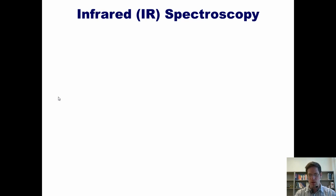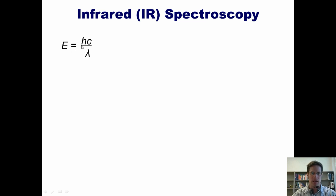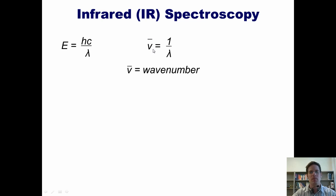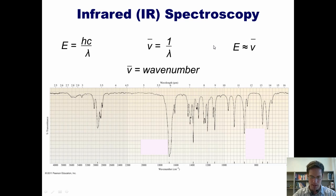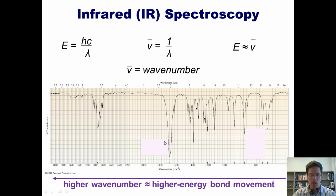I want to reacquaint you with a few physics equations. Here's the first: energy equals HC divided by lambda, where lambda is wavelength. Now the scale on IR spectra uses a symbol called nu-bar, which represents wave number. Wave number is inversely related to wavelength. Thus, because energy is inversely proportional to wavelength, energy is directly proportional to wave number. If you look at an IR spectrum, the scale at the bottom is written in wave numbers with units of inverse centimeters. So the higher the wave number, the higher energy the bond movement it causes.